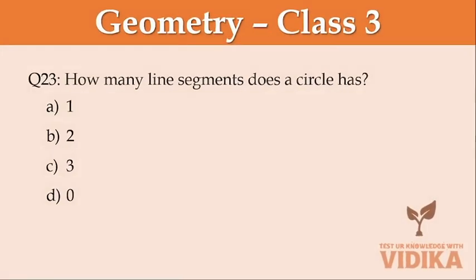How many line segments does a circle have? Option A one, option B two, option C three, option D zero.